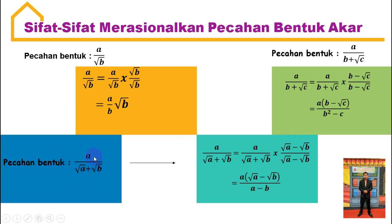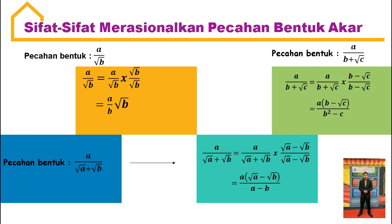Selanjutnya, bentuk pecahan A per akar A plus akar B. Maka sekawan dari akar A plus akar B itu adalah akar A minus akar B. Jadi, A per akar A plus akar B dikali sekawan penyebutnya yaitu akar A minus akar B per akar A minus akar B. Maka hasilnya sama dengan A dikali dalam kurung akar A minus akar B, per A minus B. Itu tadi sifat-sifat merasionalkan pecahan bentuk akar.